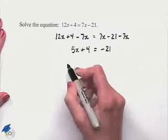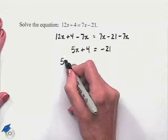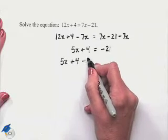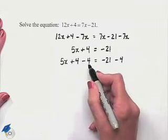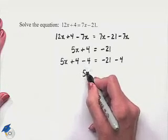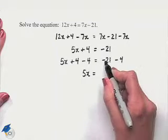The equation we can write in that step as 5x + 4 - 4 = -21 - 4. Subtracting 4 on the left leaves us with 5x. On the right, -21 - 4 can be thought of as -21 plus a negative 4, that gives us -25.